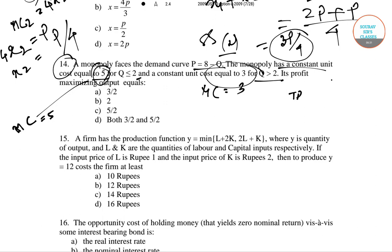First calculate the total revenue which is 8Q minus Q squared. So the marginal revenue is 8 minus 2Q. This is true for both cases. For the first case we have MC equals 5, so 8 minus 2Q equals 5. Then 8 minus 5 equals 2Q, so Q equals 3 by 2.